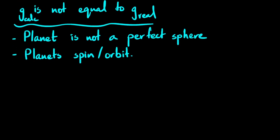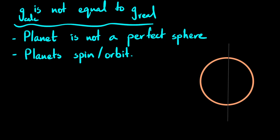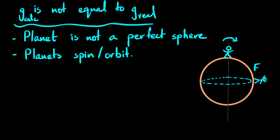Let's draw this out. Suppose this is a planet, and this is the equatorial plane. We have a person standing on the axis of rotation — at the pole — and then the same person standing at the equator. The axis shows the direction of rotation. At the equatorial position, the person is some distance from the axis of rotation and moving with some speed, so there is a centripetal force acting on them.